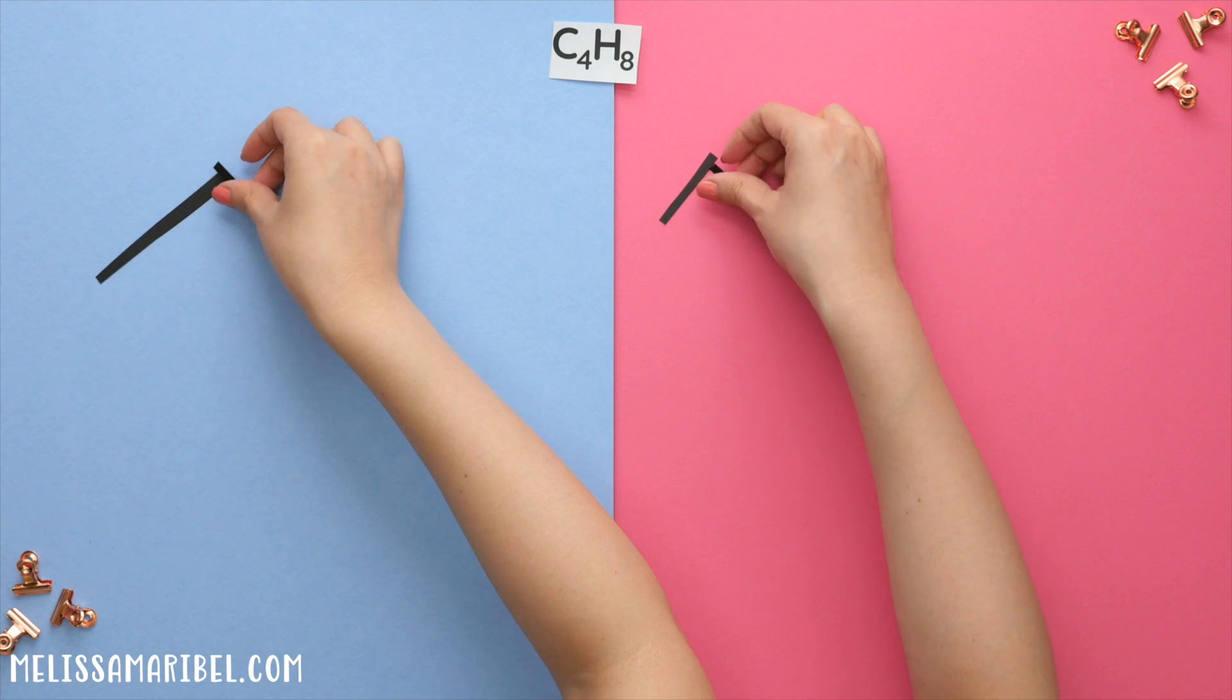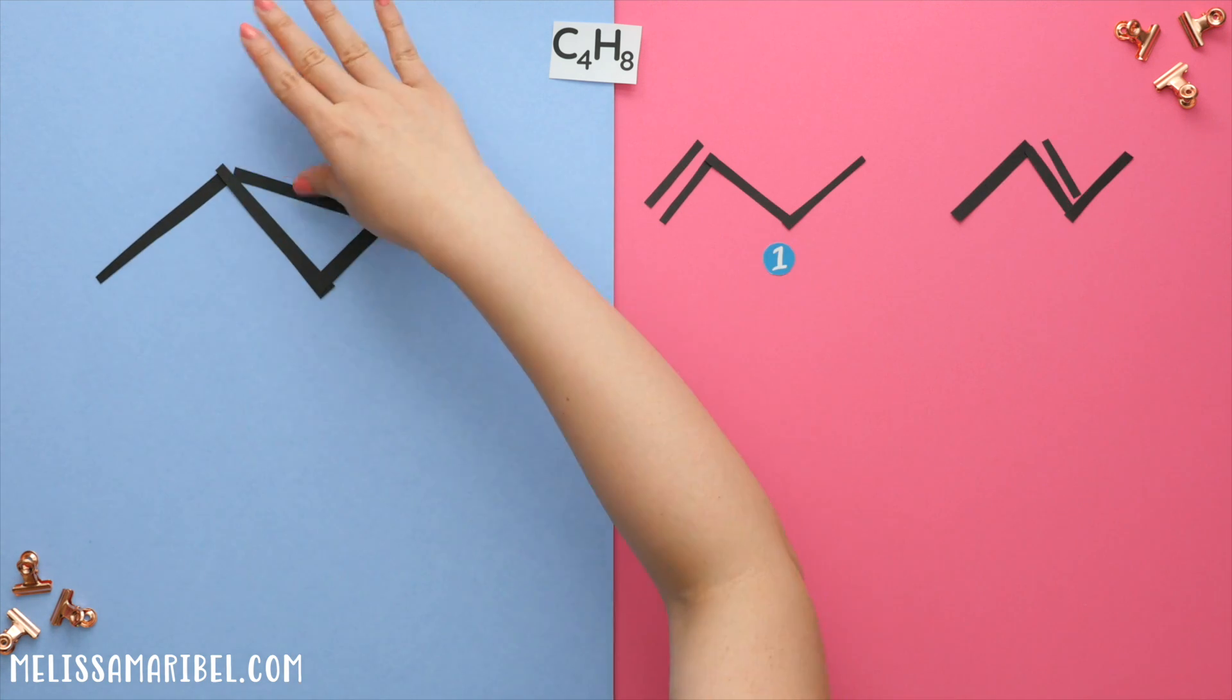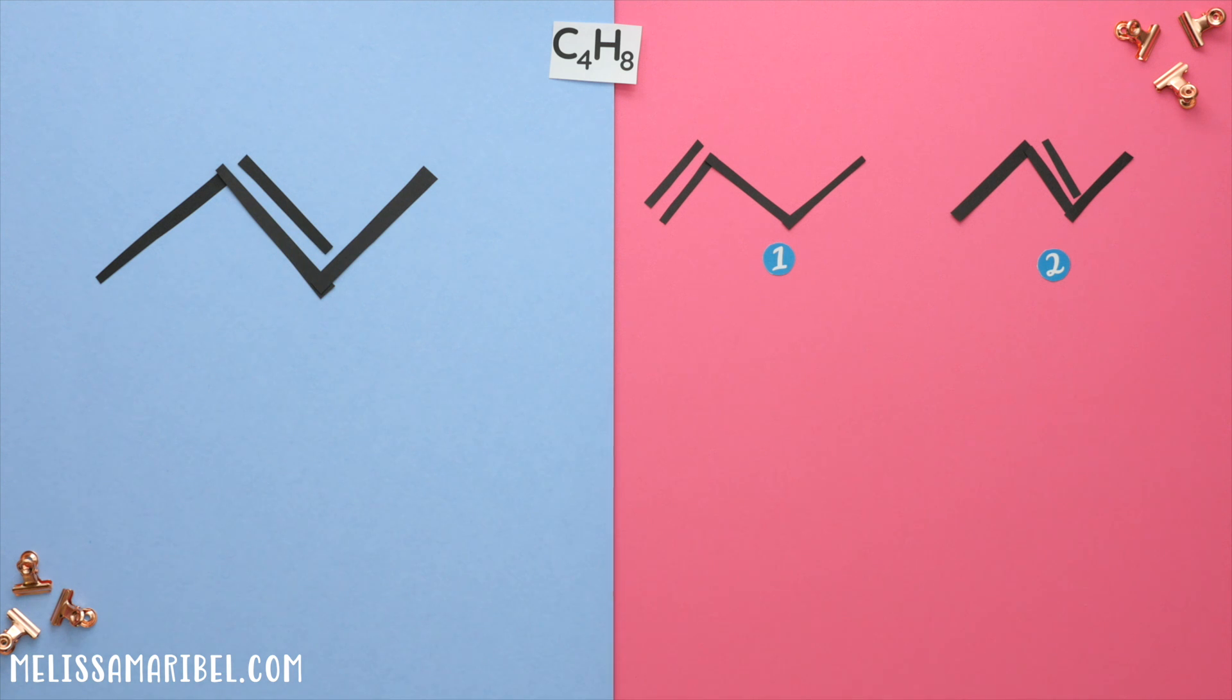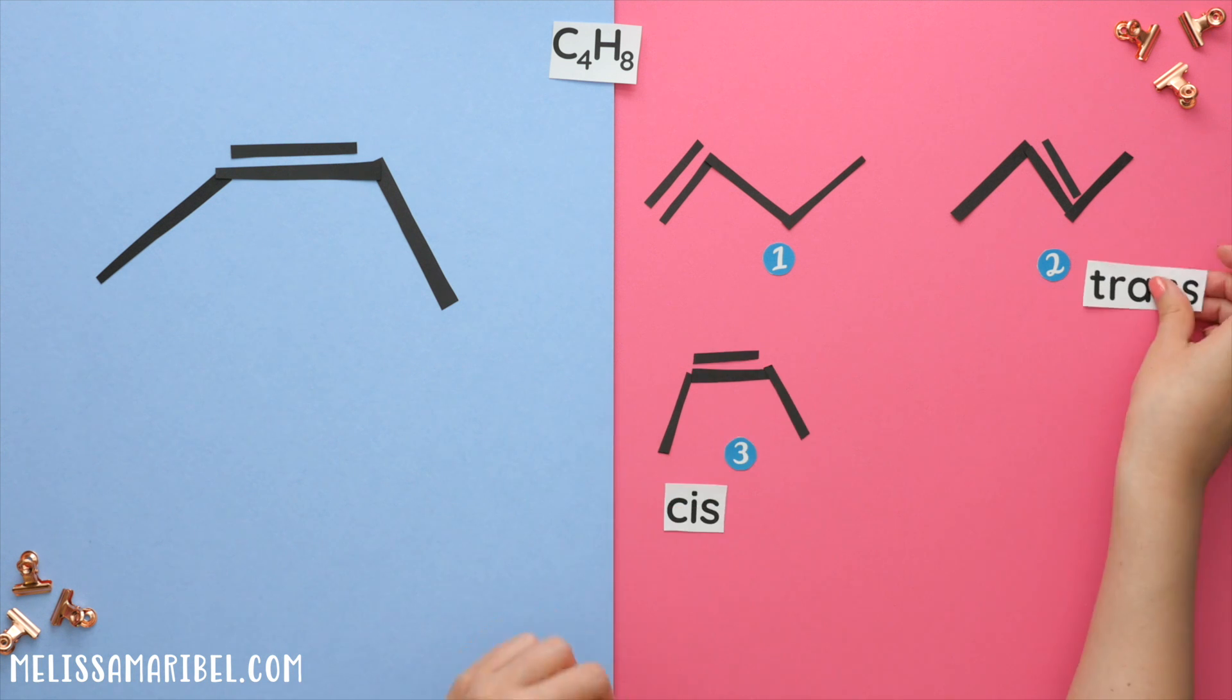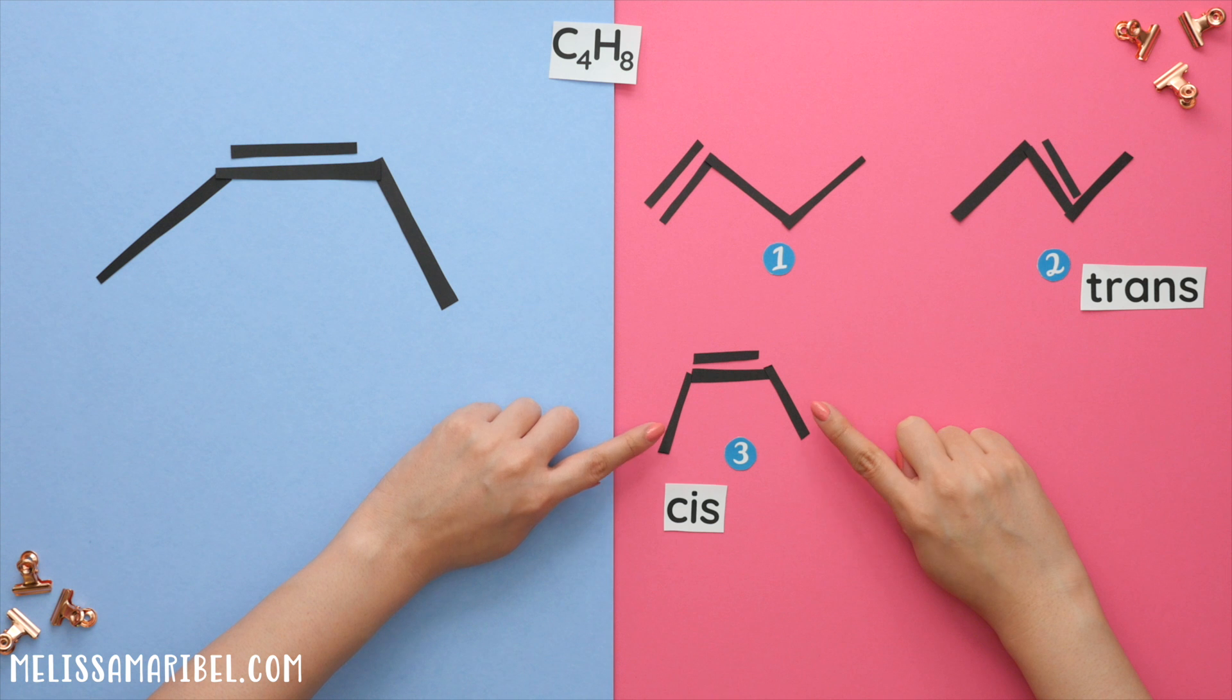Since we know it is an alkene, that is the first structure we will draw. For the second isomer, we can move this double bond over. If we move it again to the end carbon, it is actually the same structure as the first original structure we just drew. But we can instead move this bond down. We now have a cis and trans isomer. Where trans refers to the substituents being on the opposite side of the double bond. And cis refers to the substituents being on the same side of the double bond. Since there are no other ways to draw this alkene, we can now see if we can make this into a cyclic ring.